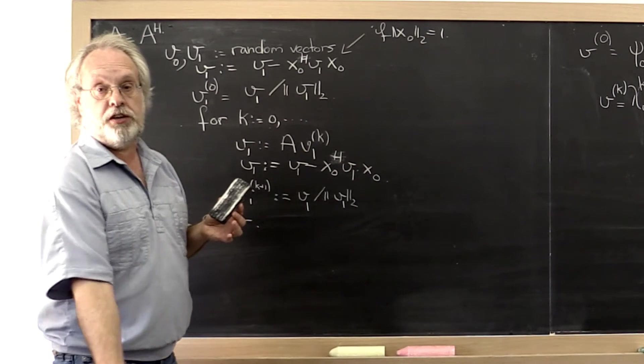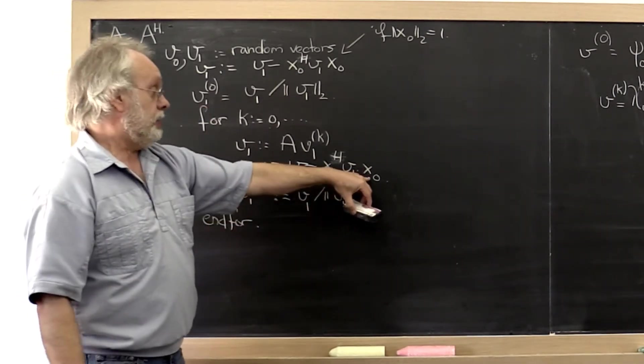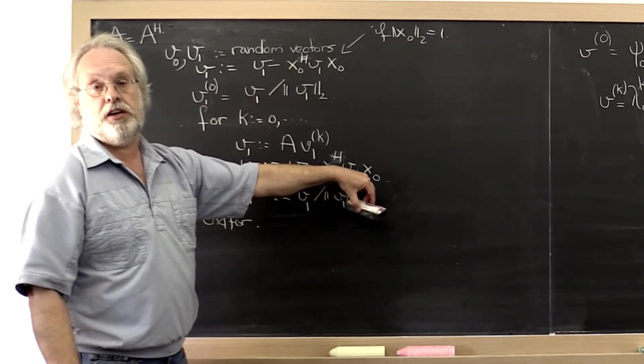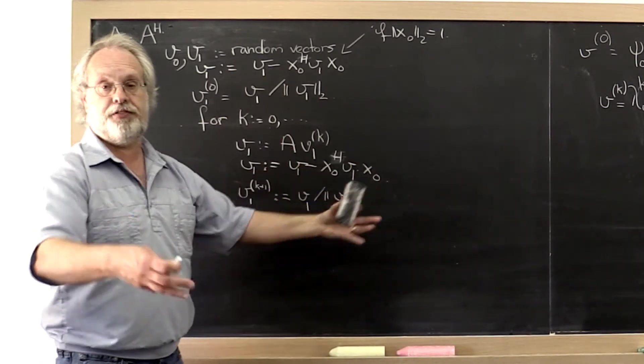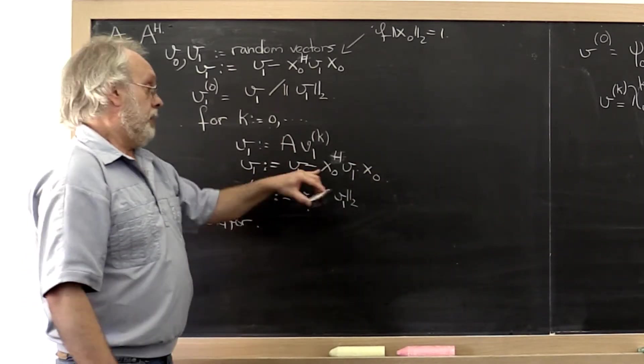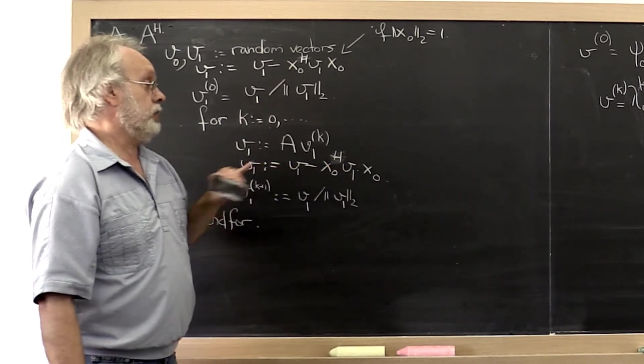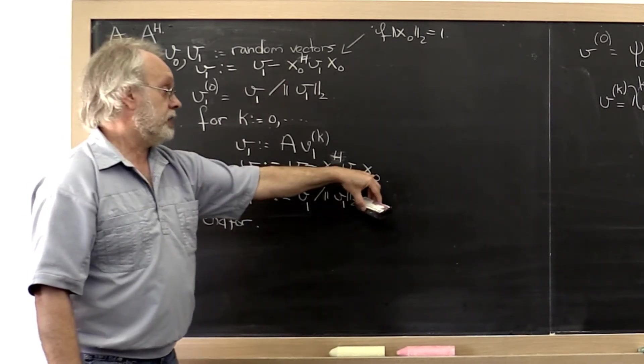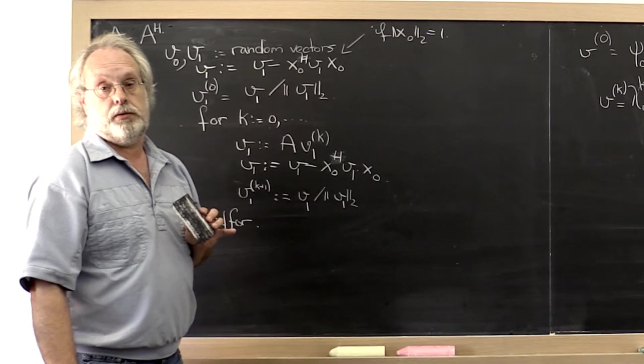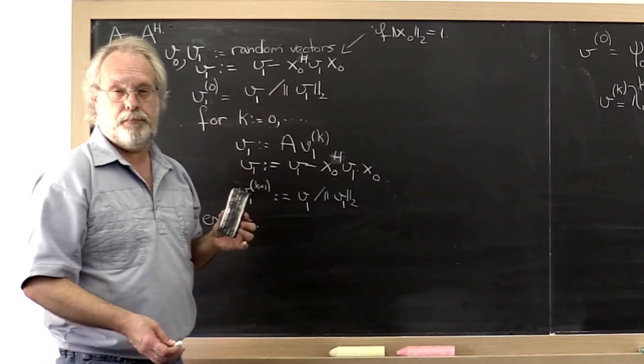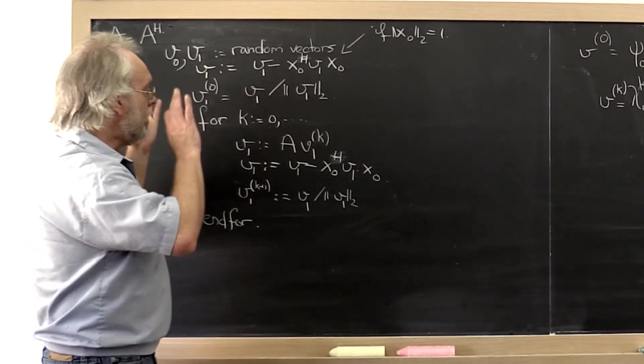Except that instead of orthogonalizing to x0, we orthogonalize to the current vector v0, the kth iteration of that, which of course eventually will end up in the direction of x0. And therefore eventually this will have the same net effect as making our vector v1 orthogonal to the vector x0. You get my drift? Now let's think about that.